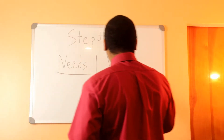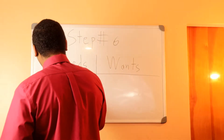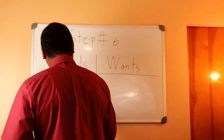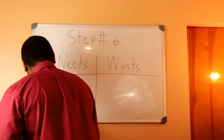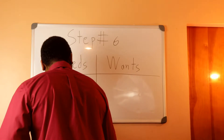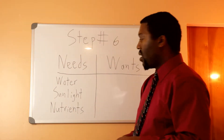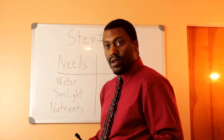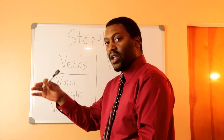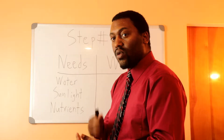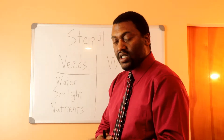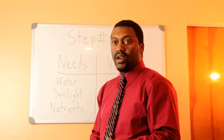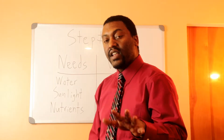I drew this line right here to show the needs — water, sunlight, nutrients. These are the needs for the body to maintain. Now there was a guy named Maslow who came up with a pyramid — the hierarchy of needs. Number one was food, water, and shelter. Number two, safety and security. Number three, healthy relationships. Number four, work on your goals. And number five, self-actualization.